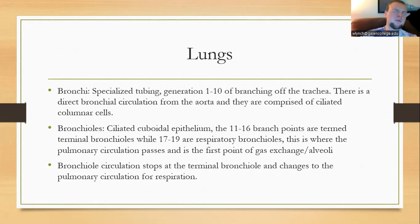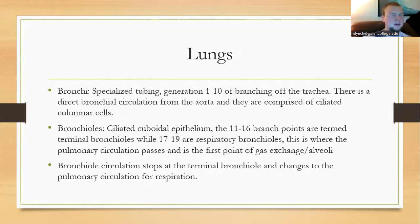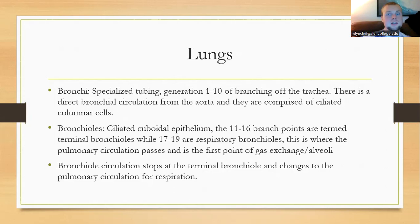Entering the lungs, we first have the bronchi, which categorize the first 10 branching points. Branches 1 through 10 from the trachea are known as bronchi, where direct bronchial circulation from the aorta goes. They have ciliated columnar cells that pass mucus back up through the mucociliary escalator. Branching points 11 through 16 are the bronchioles — ciliated cuboidal epithelium, also working with the mucociliary escalator. Branching points 17 through 19 are the respiratory bronchioles, where pulmonary exchange passes into the first point of gas exchange at the alveoli.